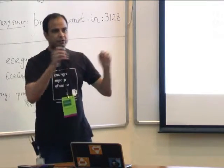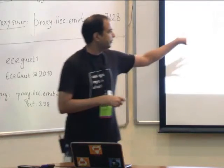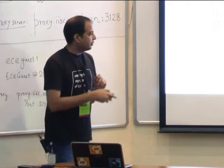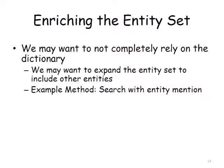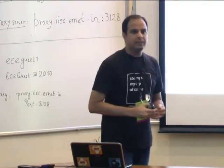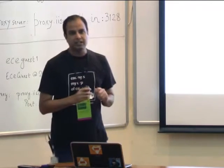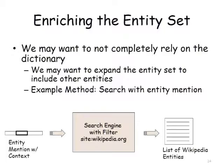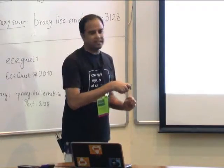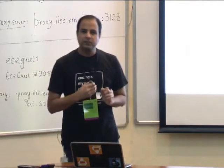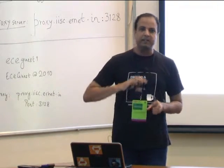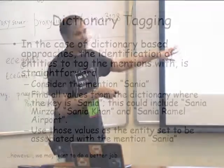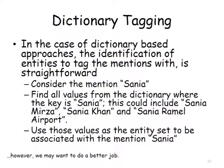To do a better job, you may want to expand the entity set beyond the dictionary. Sometimes the dictionary is biased, so you could search with the entity mention plus context using a search engine with the filter site:wikipedia.org, and get a list of Wikipedia entities that match. This is another way of expanding the set of entities that can potentially be linked to a particular key phrase.